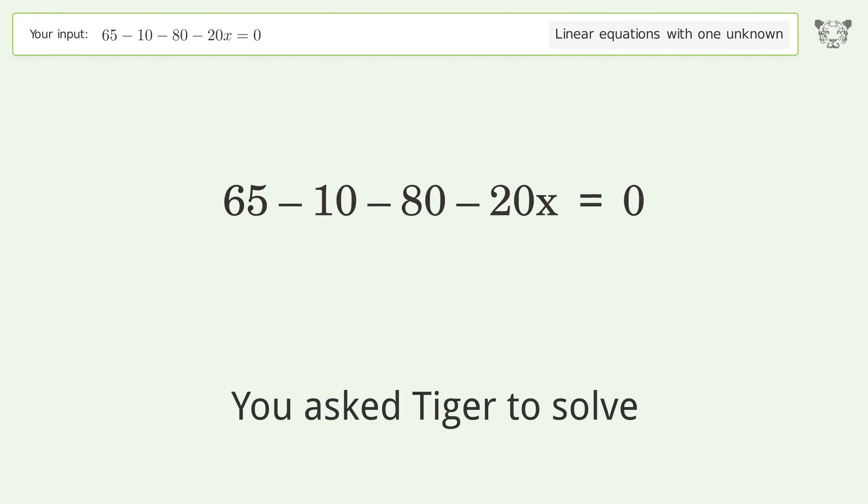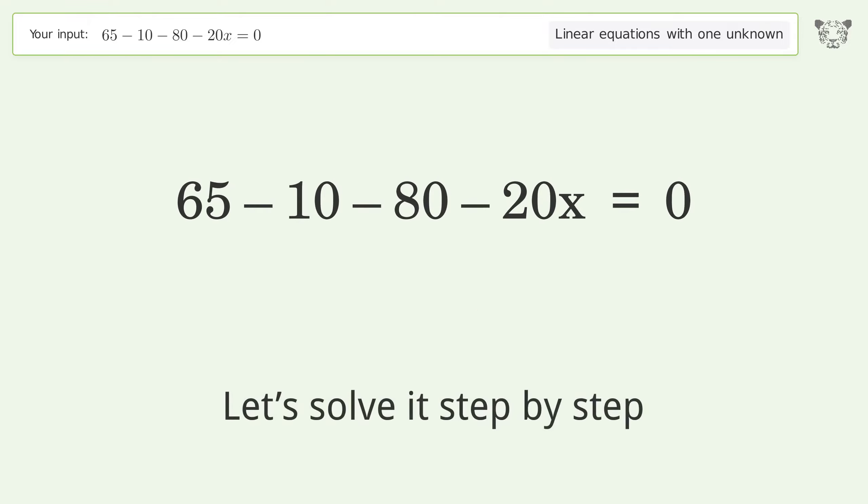You asked Tiger to solve this. It deals with linear equations with one unknown. The final result is x equals negative 5 over 4. Let's solve it step by step.